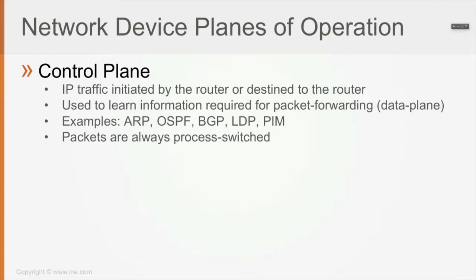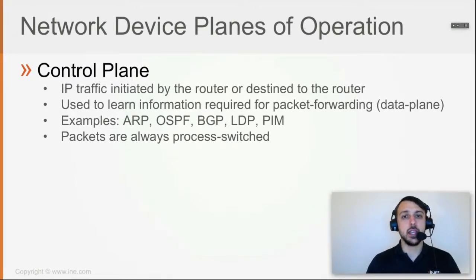The control plane does not handle traffic that is merely transiting the router. Control plane traffic is used by the router to learn the information required for packet forwarding, which is the data plane's job. Examples of control plane protocols include ARP, OSPF, BGP, LDP, and PIM. Because these packets are always destined to or initiated by the router, they are process-switched — meaning they are handled by the CPU.